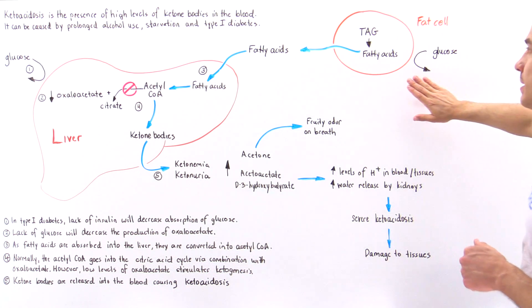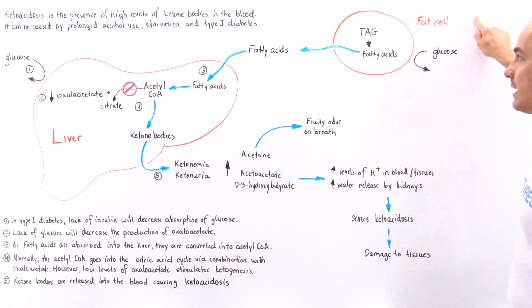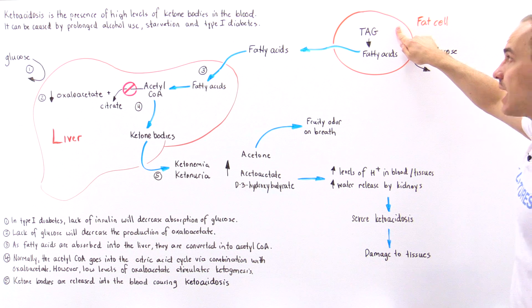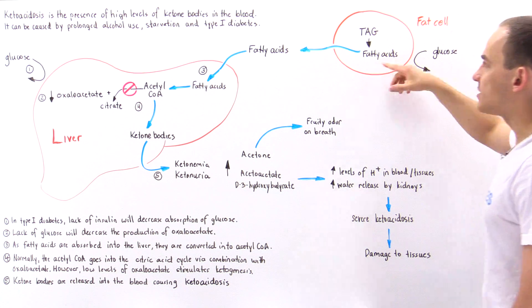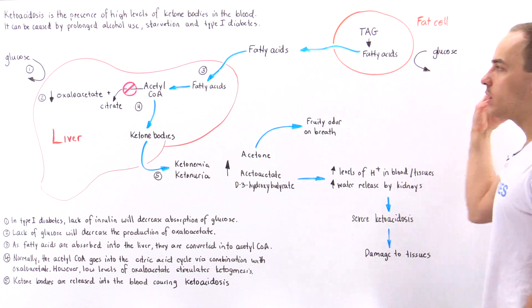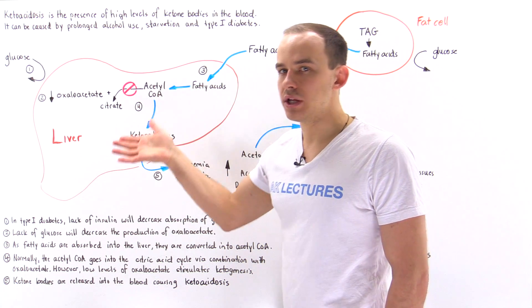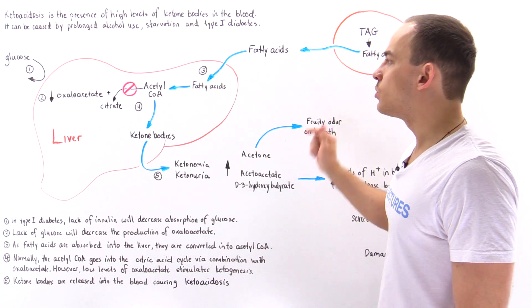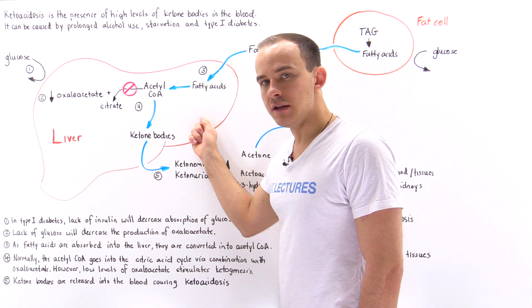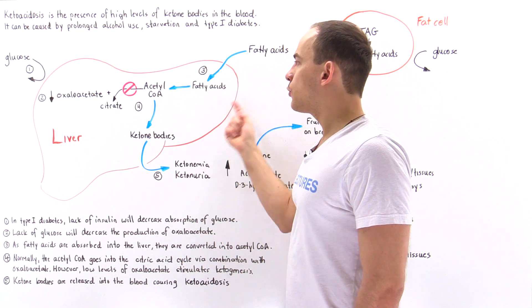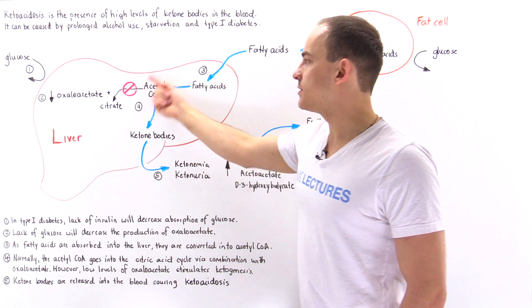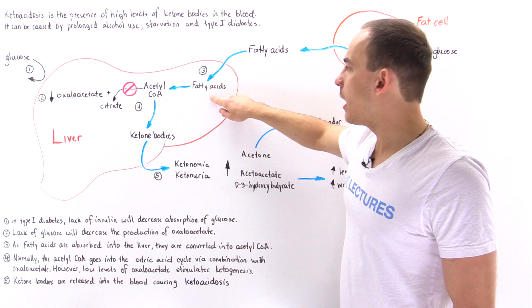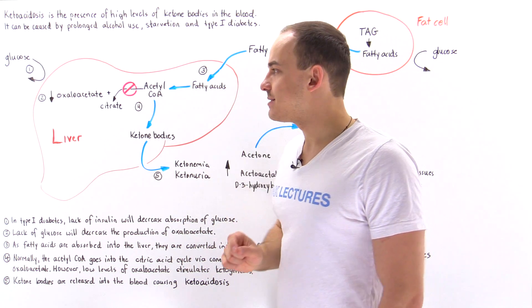At the same time, in our adipose tissue, in our fat cells, the inability of the glucose to be absorbed by these fat cells will stimulate the breakdown of triglycerides into fatty acids. And so these adipose cells will continue dumping these fatty acids into the bloodstream, and these fatty acids will ultimately be absorbed by that liver. When we increase the levels of fatty acids inside our liver, we're going to essentially increase the levels of acetyl coenzyme A, which comes from the beta degradation of fatty acids.